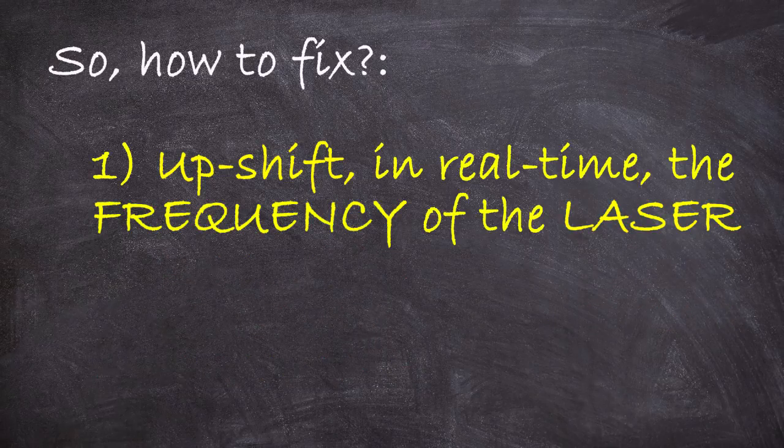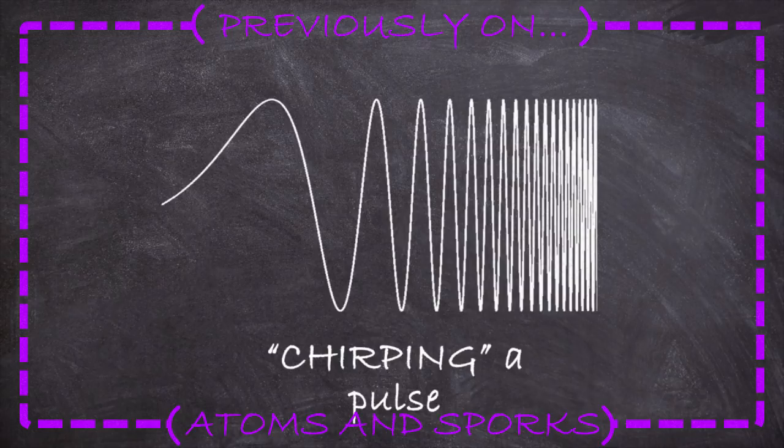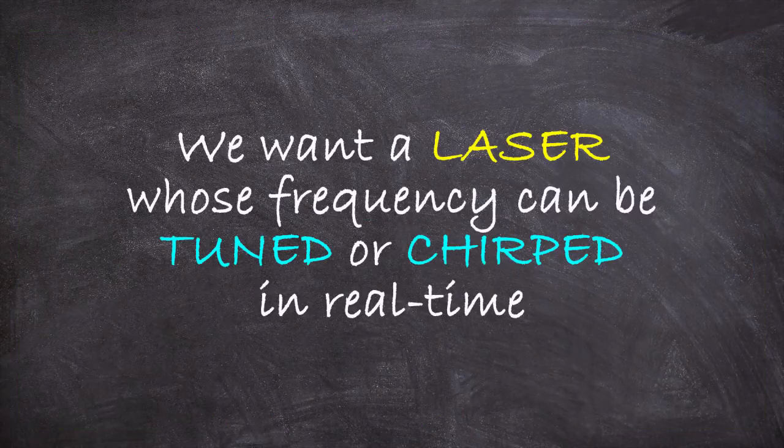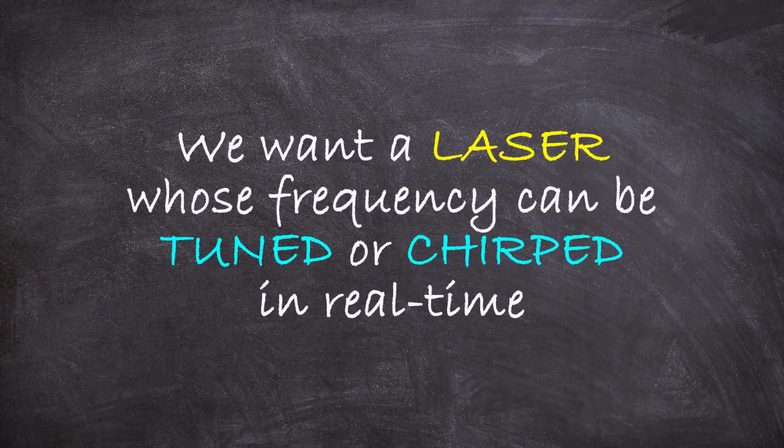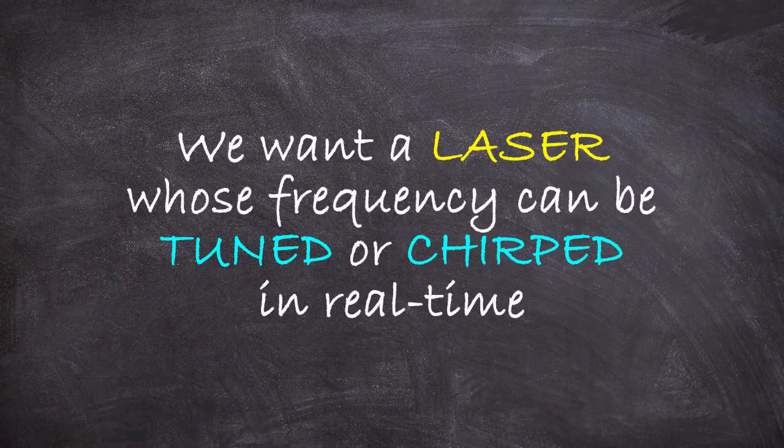The first of these approaches is called chirp cooling. We've seen this word chirp in a previous video about the 2018 Nobel Prize, and it just means a wave whose frequency is actively changing in time. And that's what we want to do. As the atoms are slowed by absorption, we want to actively detune or chirp the frequency of the laser to restore resonant absorption.